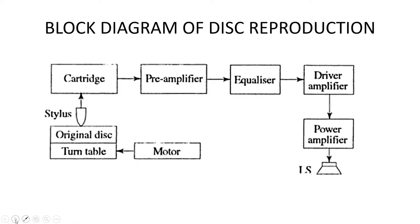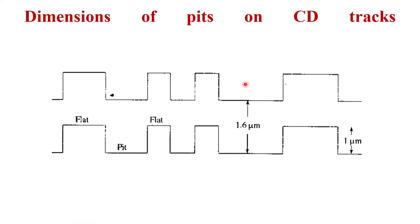The block diagram of disc reproduction: your disc is kept on the turntable, a stylus reads the disc and gives output to the cartridge. The cartridge gives that signal to the pre-amplifier, then to the equalizer, then to the driver amplifier, then to the power amplifier, and then to the loudspeaker. So you are having a stylus to read the data. Exactly in the reverse order of recording, your data is read out at the reproduction side.